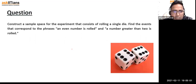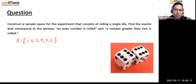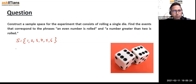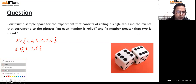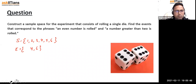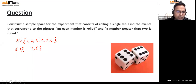Construct a sample space for rolling a single die: 1, 2, 3, 4, 5, and 6. Find the event that corresponds to rolling an even number — event E is 2, 4, and 6. For the event 'a number greater than two is rolled,' we include 3, 4, 5, and 6. If they want 'even and greater than two' combined, we remove 2 from the even numbers, giving us 4 and 6.